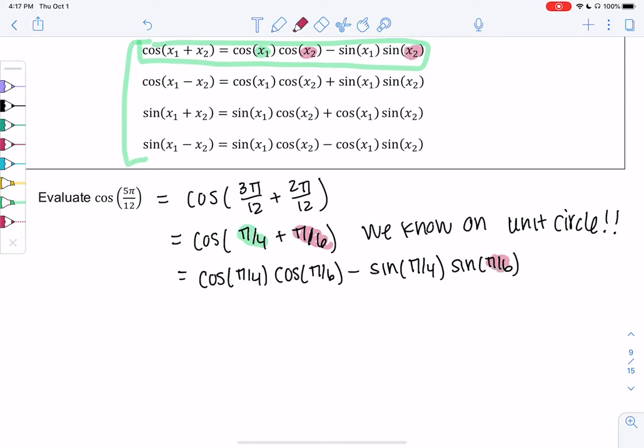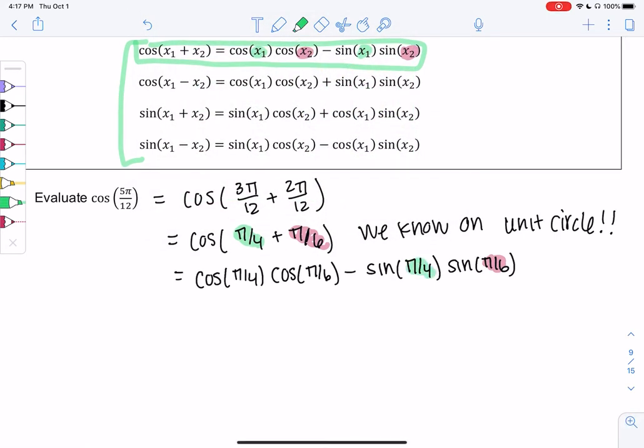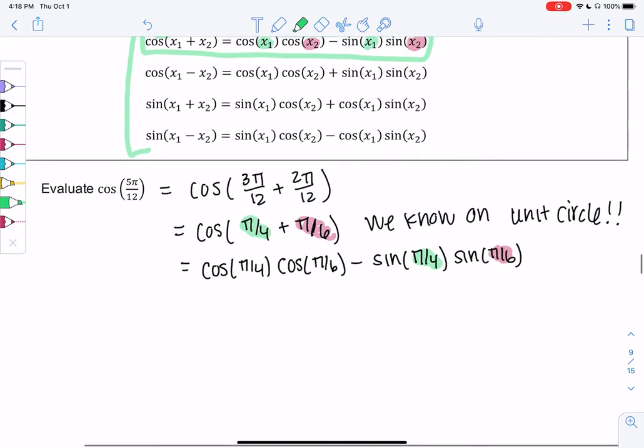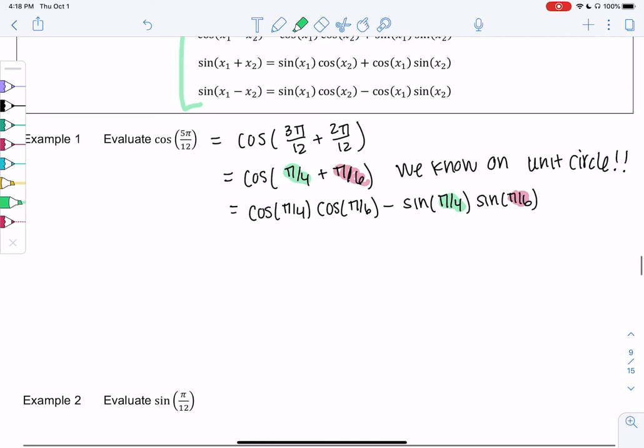Alright, so pi over 6 is my x2, x1 is pi over 4. Cool. And now we know how to find all these. So we're doing a lot of work for like one single thing, but it's what we have to do when it's not from our standard unit circle.